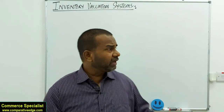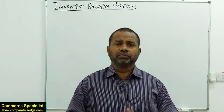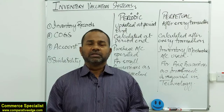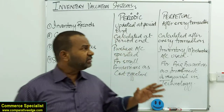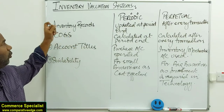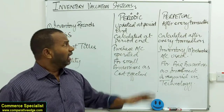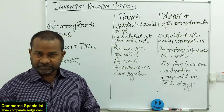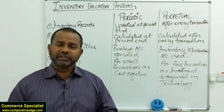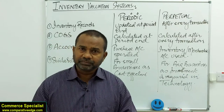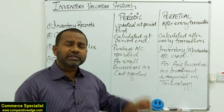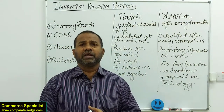Let me summarize the comparison between periodic and perpetual in four points. First, when inventory records are updated: under periodic it's at the end of the period; under perpetual, records are updated as soon as the transaction takes place — whether for a purchase, a sale, or even returns.